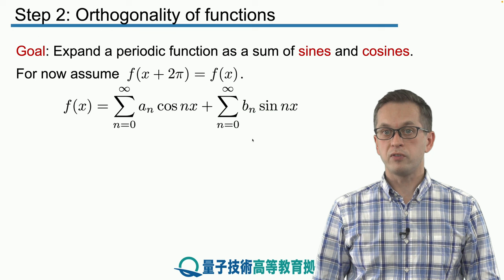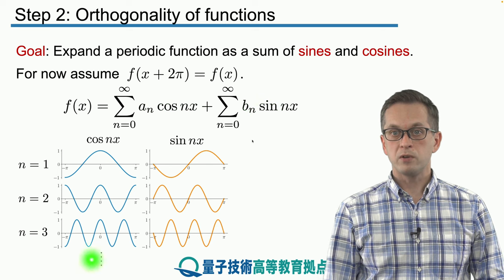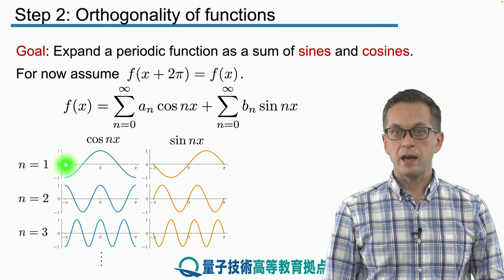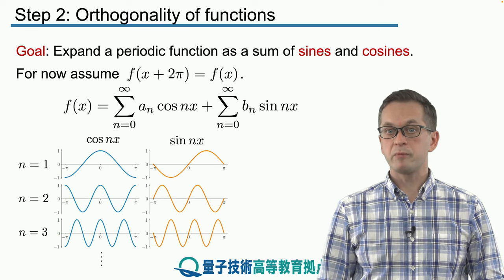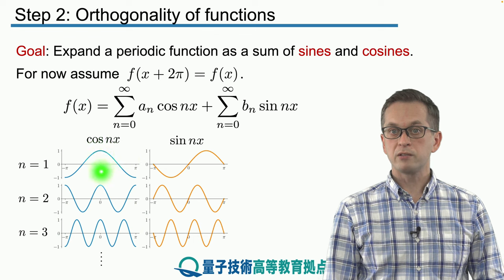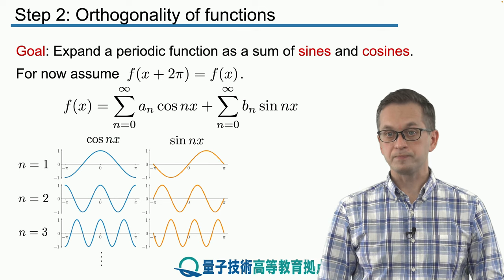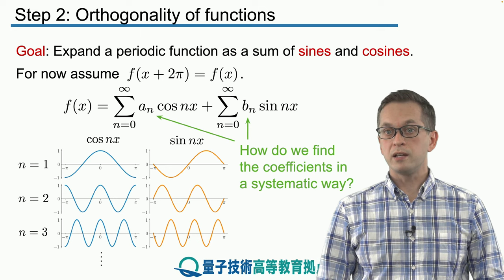The question is how do we find these coefficients? Our basis functions are cosine nx and sine nx. On the left hand side we have the cosines as we increase n: for n equals one it's a nice function, n equals two it oscillates faster, n equals three even faster, and same for the sines. Cosines are symmetric around x equals zero because they are even functions, whereas the sines are anti-symmetric because they are odd functions. The central question is how can we find these coefficients an and bn in a systematic way?